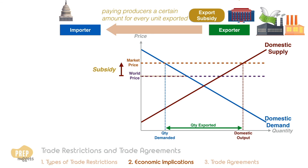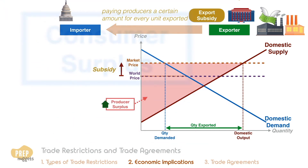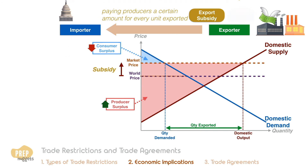The producer surplus is increased at the expense of consumer surplus. This is also at the expense of taxpayers, as government revenue is spent on the subsidies.